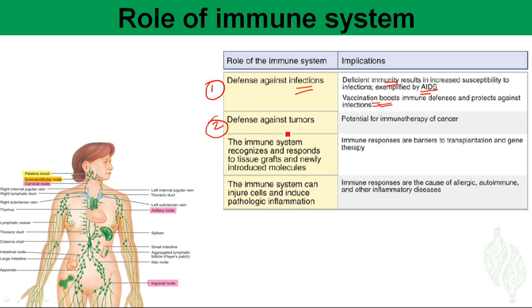The second role of the immune system is defense against tumors. Especially CD8 T cells and NK cells try to kill most tumor or cancer cells in our body. The immune system also plays a role in tissue graft rejection.